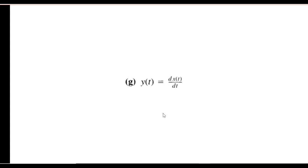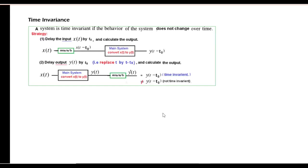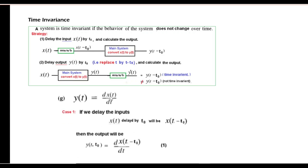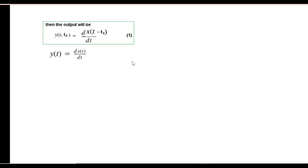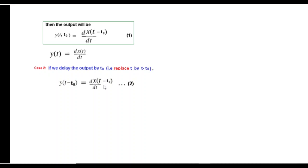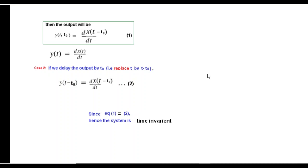Finally, part (g): y(t) = dx(t)/dt. We delay x(t) by t0 to get x(t-t0), and the output becomes dx(t-t0)/dt — this is equation 1. For the second case, we replace every t by t-t0, giving the same result. The outputs are the same in both cases: equation 1 equals equation 2, so the system is time invariant. I hope you've been able to follow this and are now comfortable solving time invariance questions. Thank you.